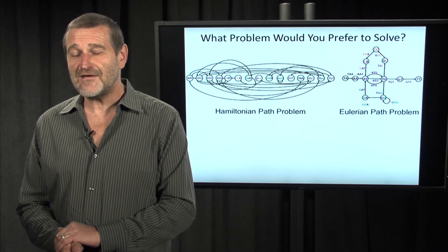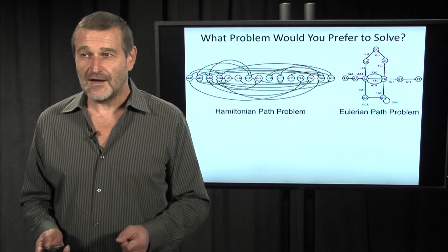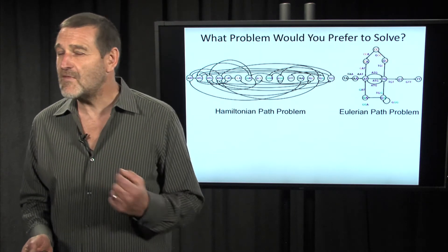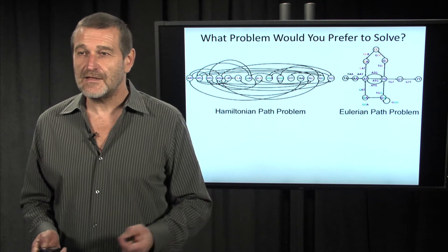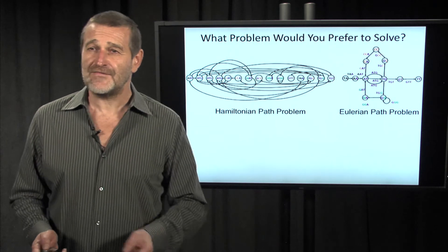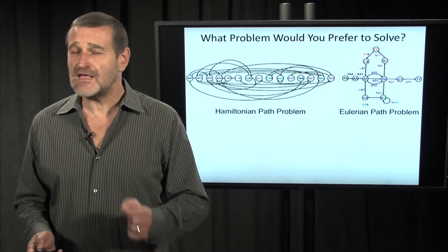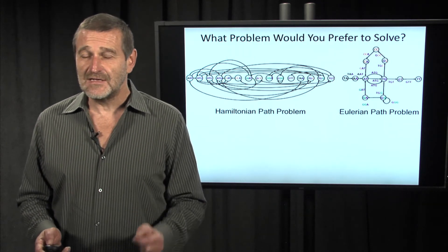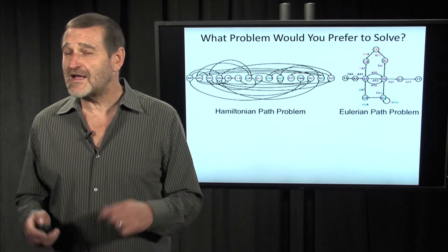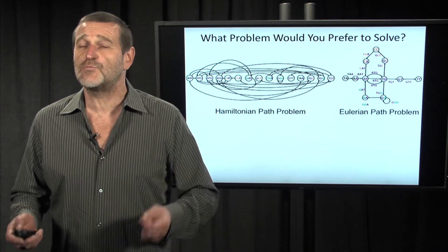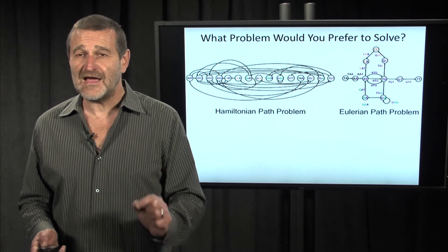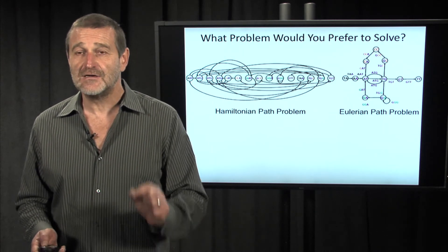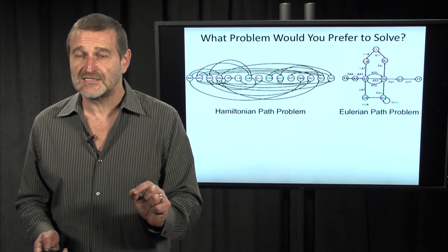Sean just gave a very wrong answer. It doesn't matter that one graph looks simpler than another. In real life, this graph will contain millions, if not billions, of edges. And it doesn't matter that one contains two million and another contains one million edges. What matters is whether we have efficient algorithms for solving these problems.